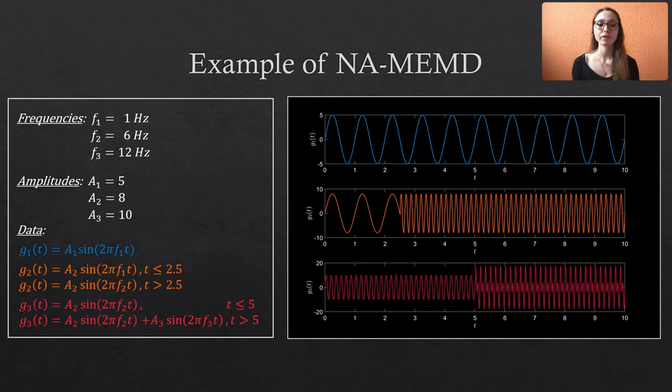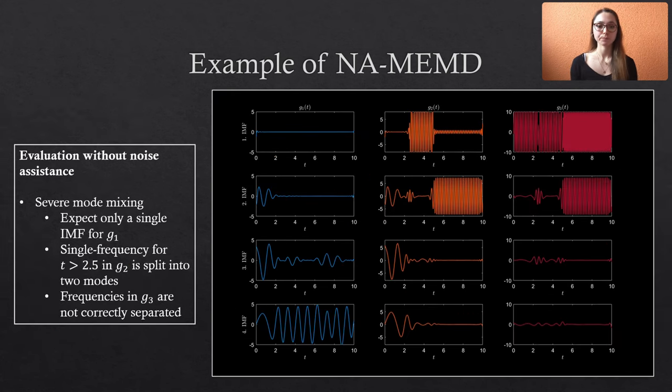When we decompose this three-variate data with a standard MEMD algorithm without noise assistance, we obtain these IMFs. As I already said in my video about the MEMD, you can just use the MATLAB code provided by Professor Mandic. I put the link in the description box below. Here we observe severe mode mixing in all channels. For example, the blue signal does only contain a single sine wave with constant parameters along the complete time span, but it is wrongly spread across several IMFs.